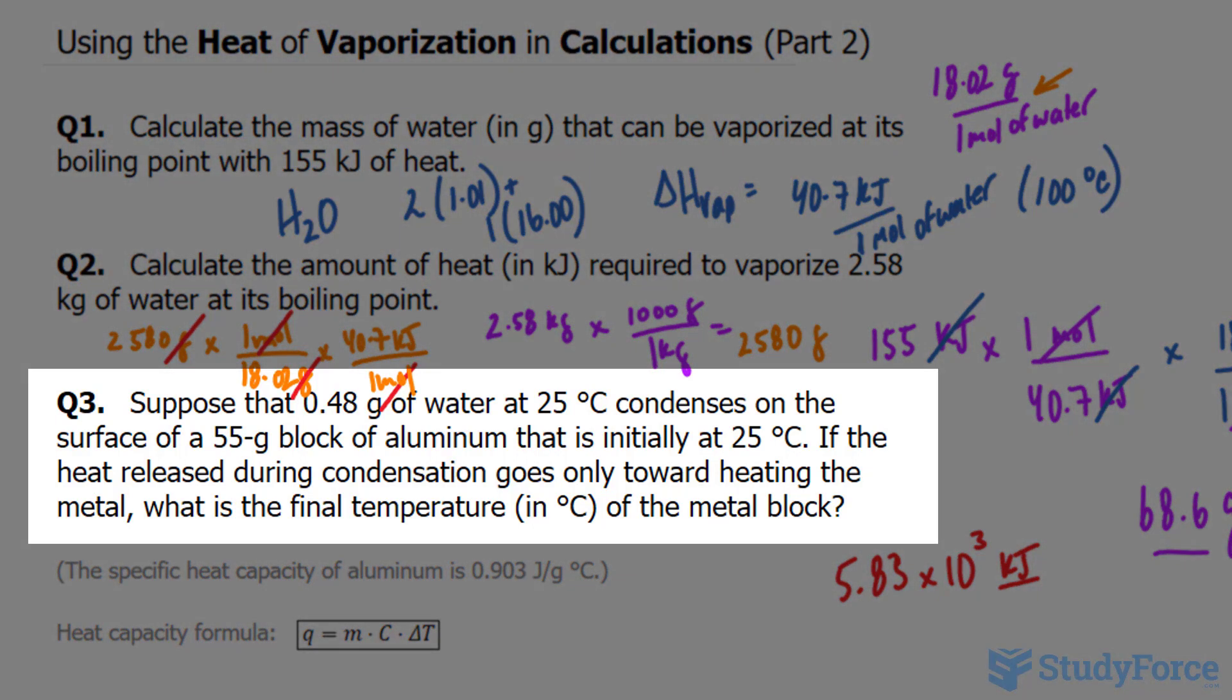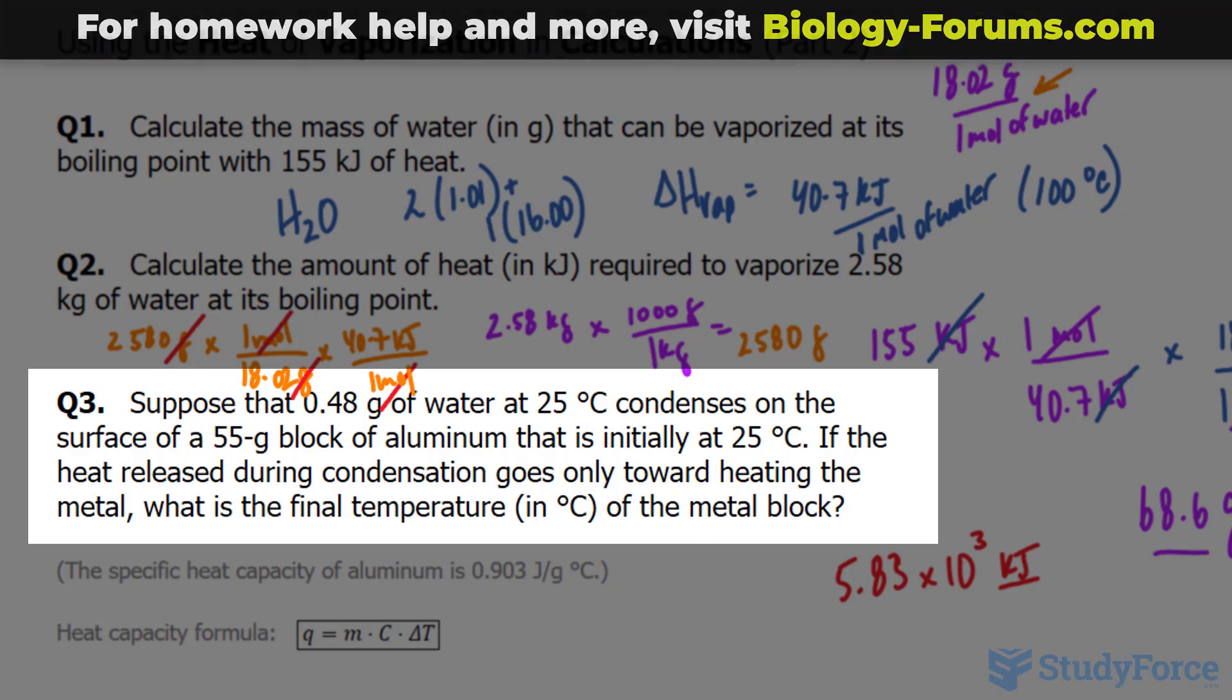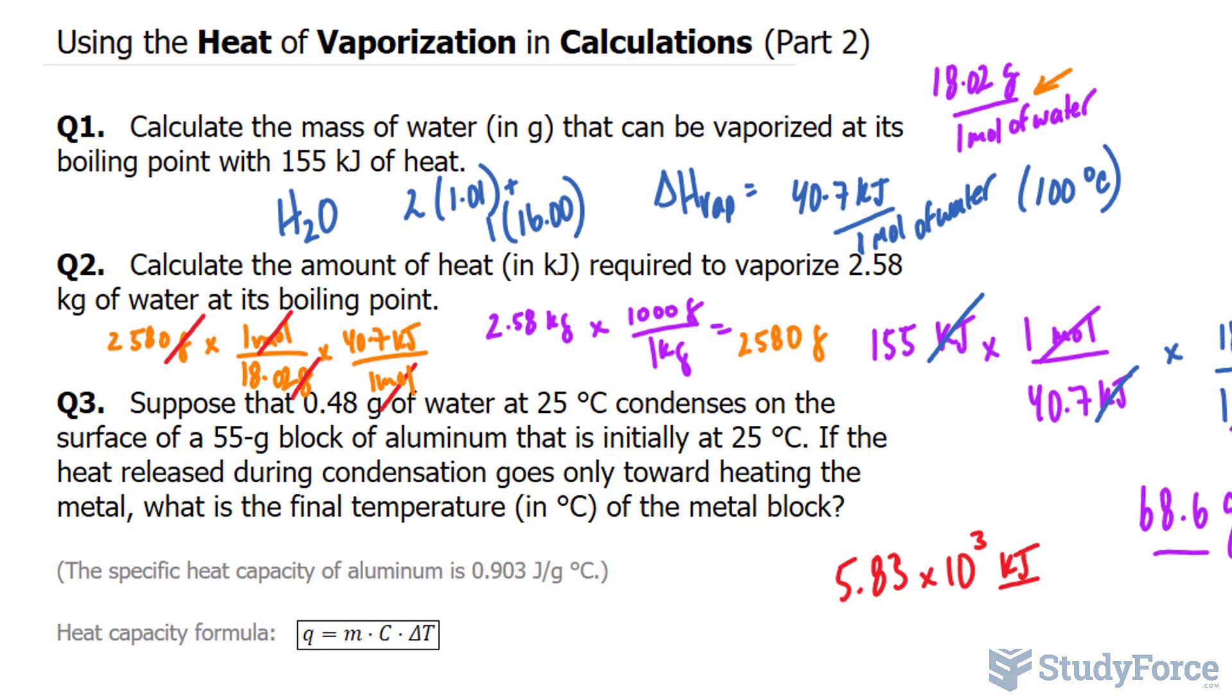Suppose that 0.48 grams of water at 25 degrees Celsius condenses on the surface of a 55 gram block of aluminum that is initially 25 degrees. If the heat released during condensation goes only towards heating the metal, what is the final temperature in Celsius of the metal block? You can picture that there's water being placed on a block of metal and that water is losing its heat.